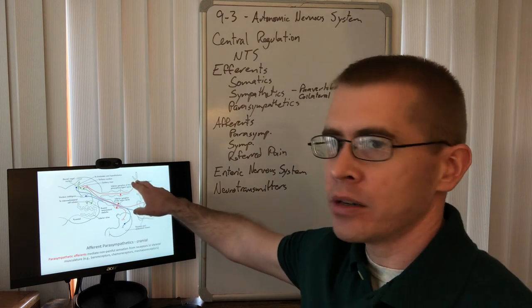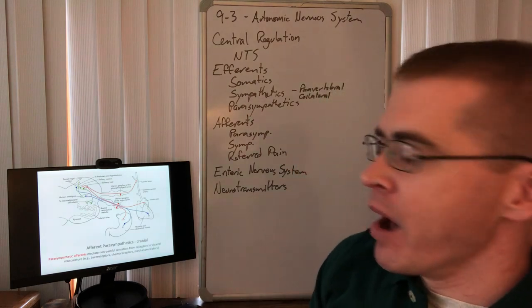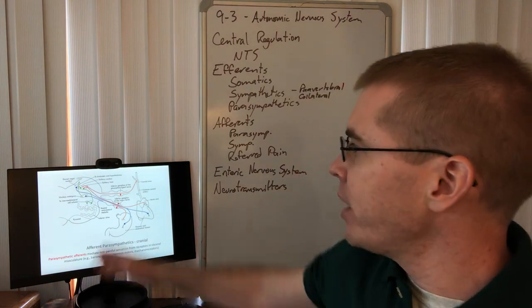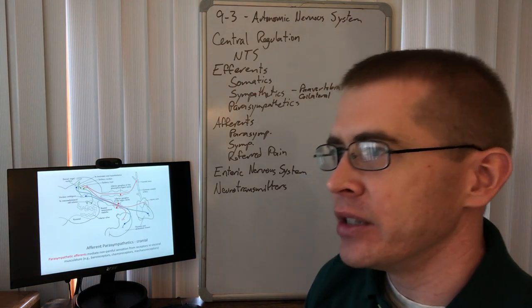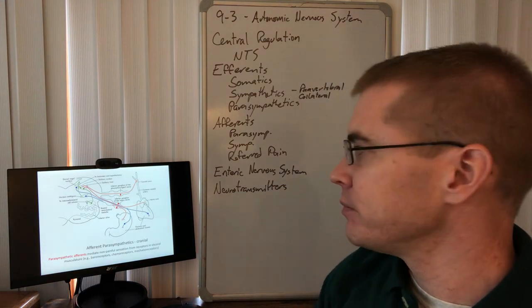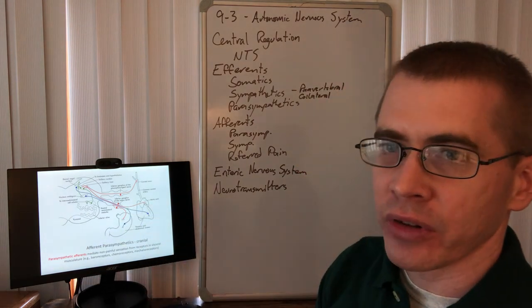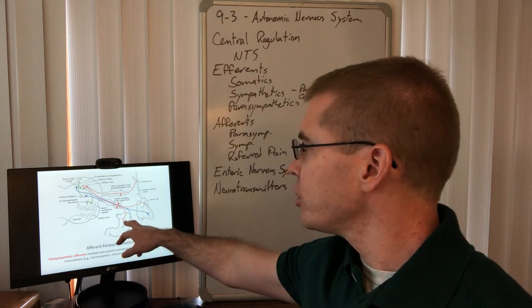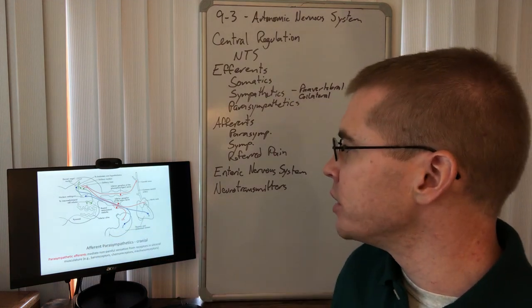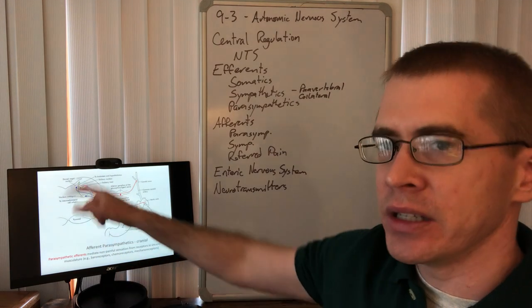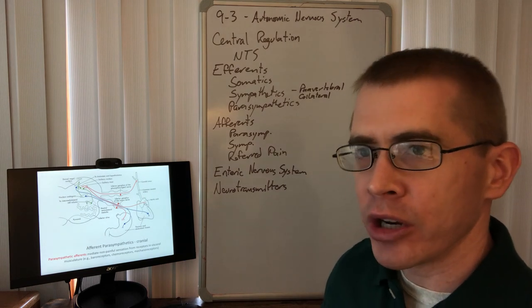So we're getting carotid body pressure information going to the nucleus tractus solitarius. So damage to glossopharyngeal nerve and this fiber path will cause a dysregulation of blood pressure. We also have autonomics from the aortic arch that are detecting similar things going along vagus nerve. We also have autonomics detecting pain in the stomach, nociception, mechanoreceptors in the stomach going to NTS as well. So there's an example of some of these parasympathetic afferents in cranial nerves.